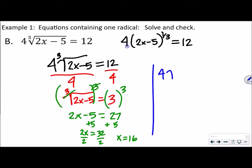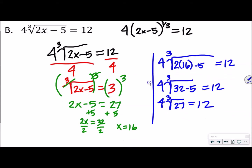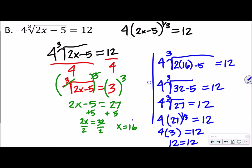We're going to do 4 times the cube root of (2 times 16 minus 5) and see if that equals 12. That gives us 4 times the cube root of (32 minus 5), which is 4 times the cube root of 27 equals 12. If you don't have a calculator that does cube roots, recall that the cube root of 27 is 27 to the one-third power, which equals 3. So 4 times 3 is 12, and 12 does indeed equal 12. That is our correct answer.